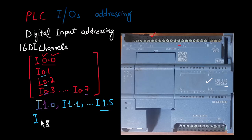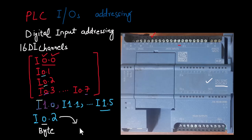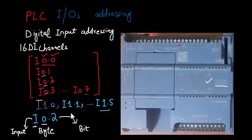Let me explain again using any digital input signal — for example, I0.2. The number towards the left of the decimal point represents the byte number, while the number towards the right of the decimal point represents the bit number, and the letter I represents the nature of the signal — whether it is input or output; in this case it is an input channel. In this way we refer to the total 16 digital input channels of this particular Siemens CPU 1214C PLC.